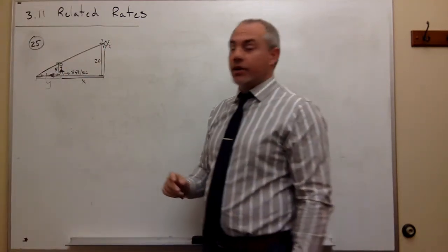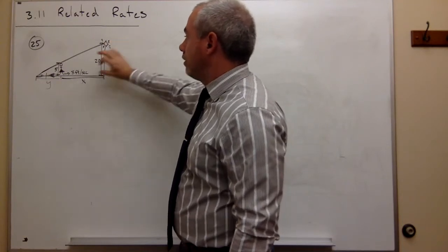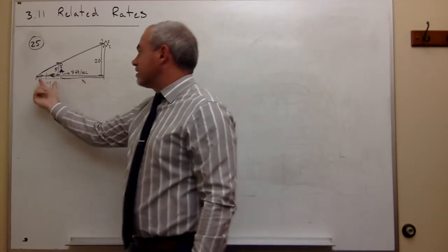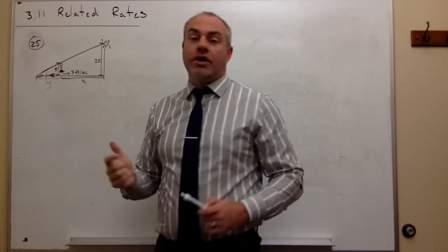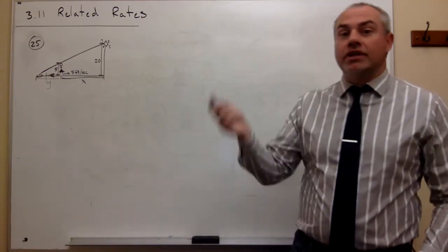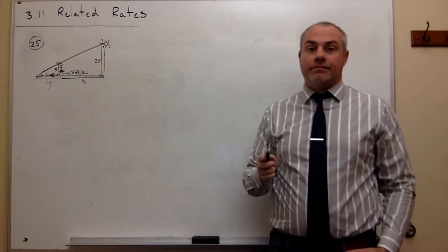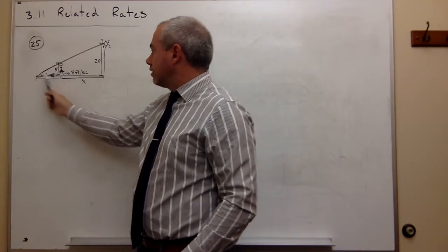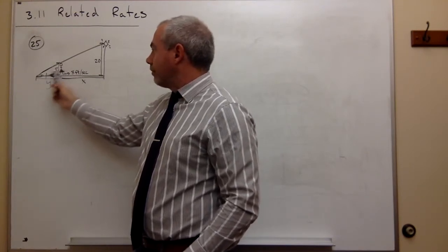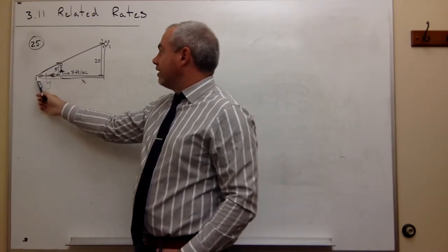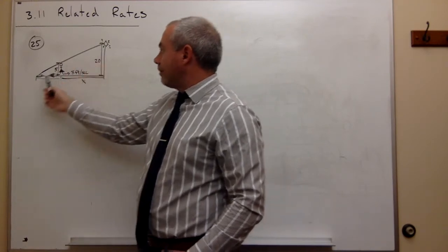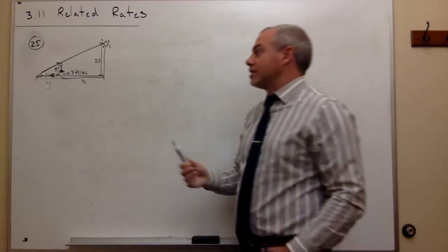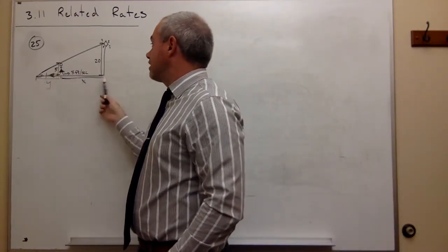So we have a 20-foot street lamp, a 5-foot woman. The distance between the woman and the street lamp is x. The distance between the tip of her shadow and the woman is y. Now we need an equation that relates all of these things together. If I look at the small triangle formed by the shadow of the woman, and the big triangle formed from the tip of the shadow to the street lamp and back, those are similar triangles — and similar triangles have the property that the ratios of their sides must be equal.